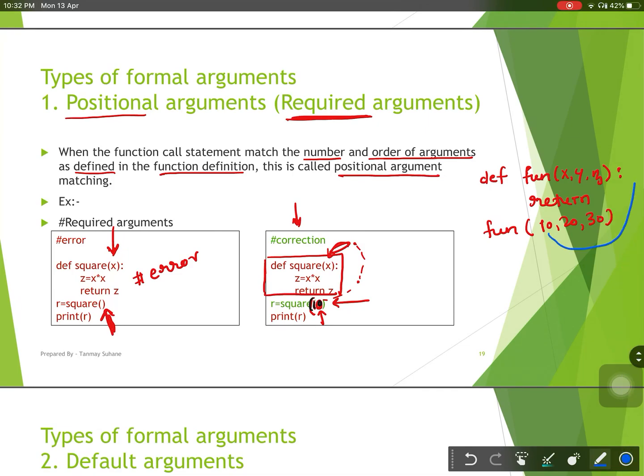So x will contain 10, y will contain 20 and z will contain 30. Now you know what is positional argument. All the arguments we have to pass by their position. And all the arguments which are there are required. If we don't pass it, we will get the error.